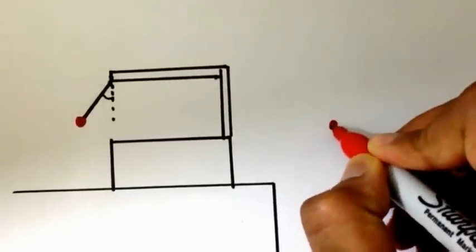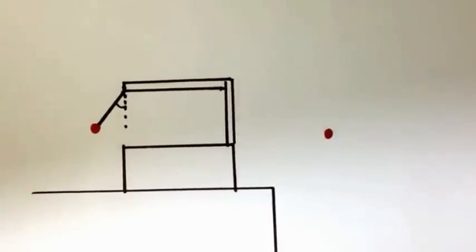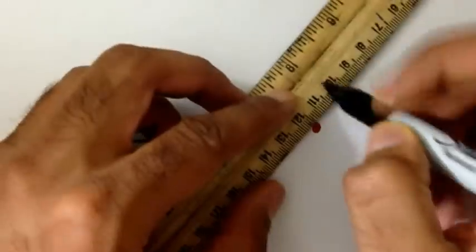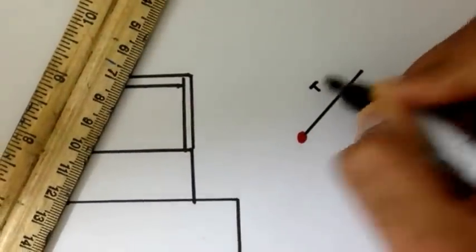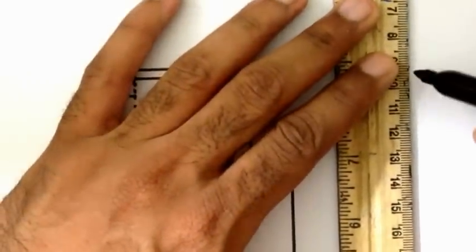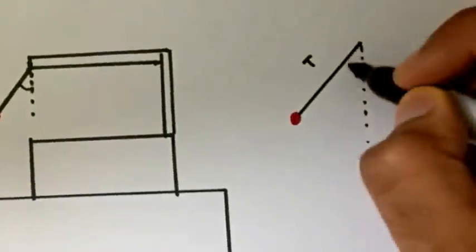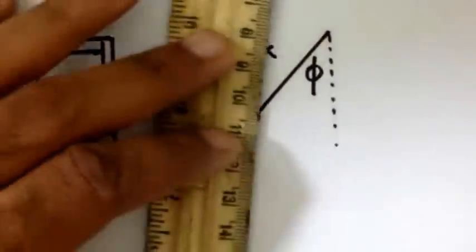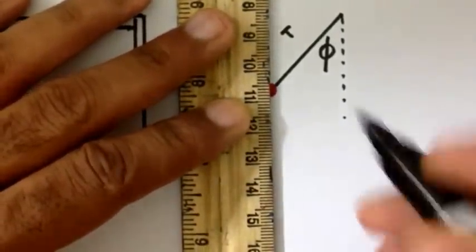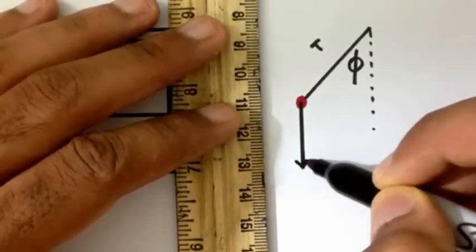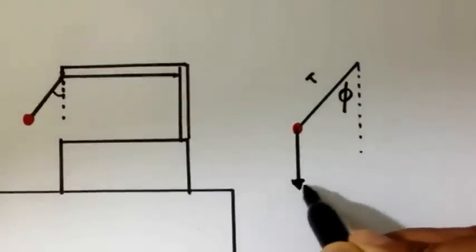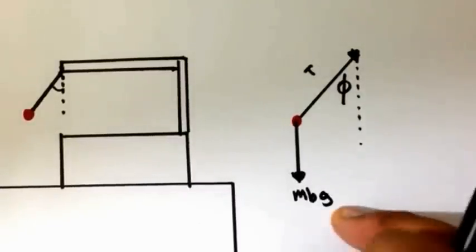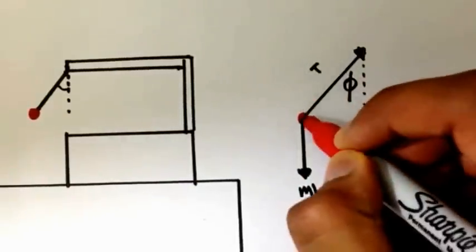We have the ball with a force acting on it — the tension of the thread, which we denote T. This thread makes an angle with the vertical, which is theta. We have another force acting from the center of gravity downward, which is of course the weight of the ball — the mass of the ball times the acceleration due to gravity. These are the two forces acting on the ball.